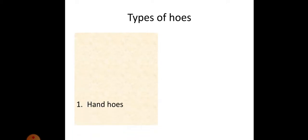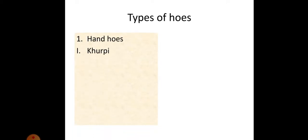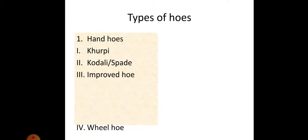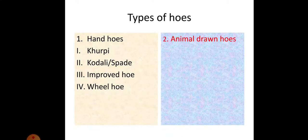Types of hoes include: hand hoes such as khurpi, kudari, and spade; improved hoes like the wheel hoe; and animal-drawn hoes including blade hoes and tine hoes.